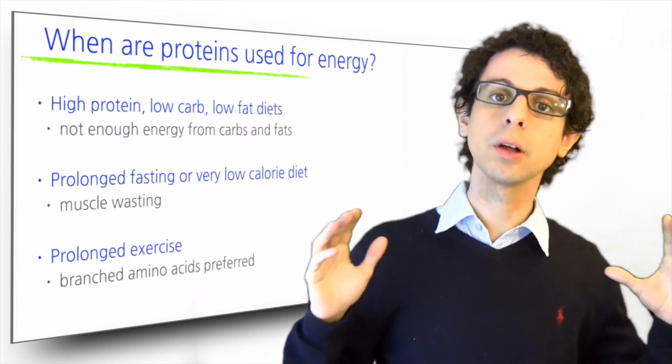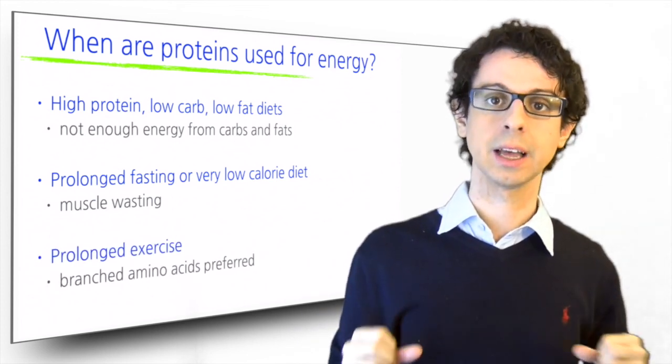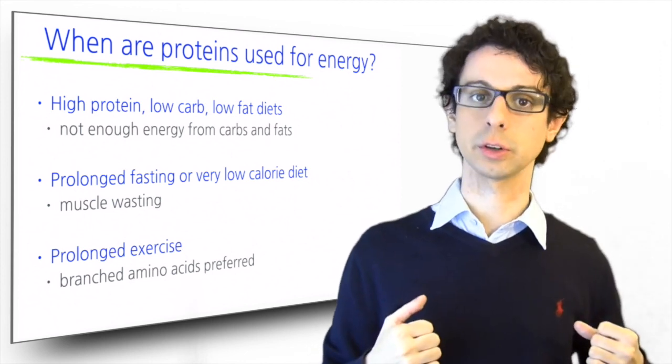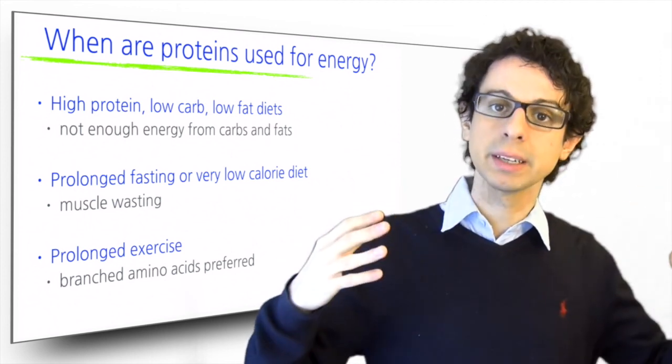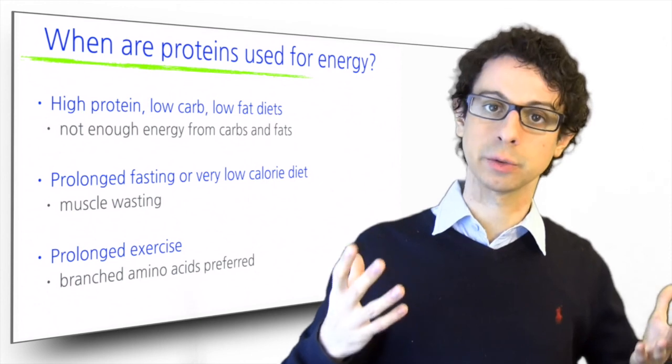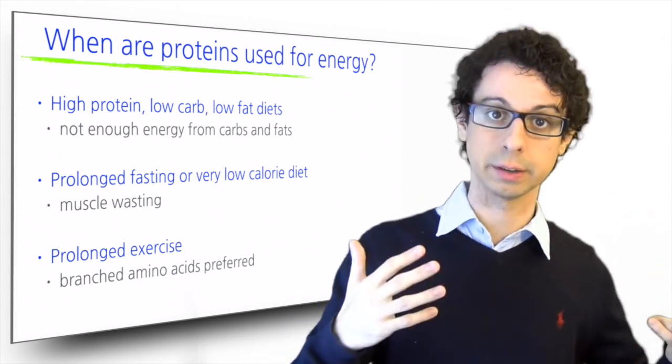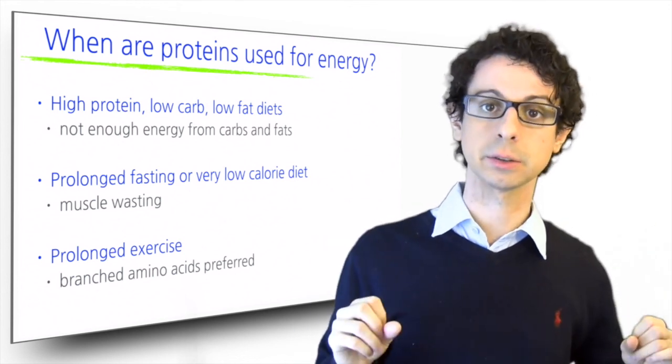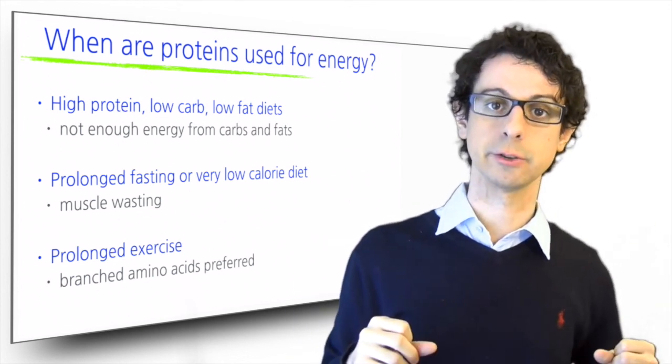The third situation is prolonged anaerobic exercise, to the point that you have completely depleted your glycogen stores. If you're doing an anaerobic activity, you cannot use fat for energy. And so you'll have to turn to proteins. Branched chain amino acids are preferred by the muscle because they are easier to make energy from.